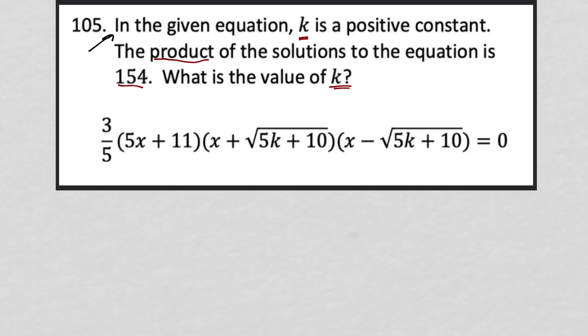It's a very straightforward question. It's telling us that the product of the solutions to this equation. Well, how would we find the solutions to this equation? We see that we have three-fifths times 5x plus 11 times x plus root 5k plus 10 times x minus root 5k plus 10 equals 0.